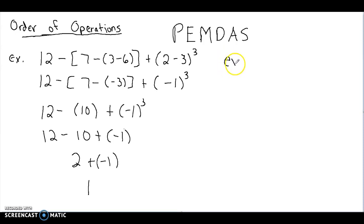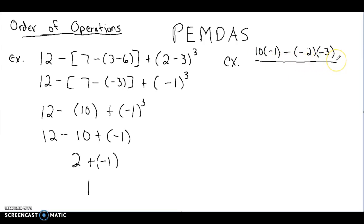Let's do one more example — this one tends to be pretty difficult. It's 10 times negative 1 minus negative 2 times negative 3 as the numerator of a fraction, all over 2 times bracket, negative 8 divided by negative 2, minus 2. When we have a fraction like this, we simplify the numerator down to a single number, then simplify the denominator down to a single number, then divide — because a fraction is another way of showing division.